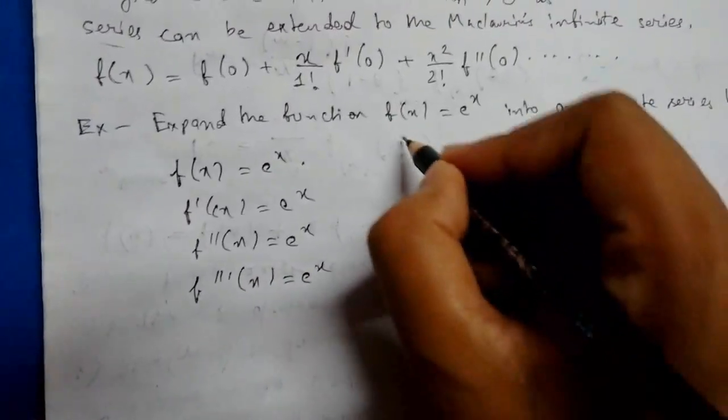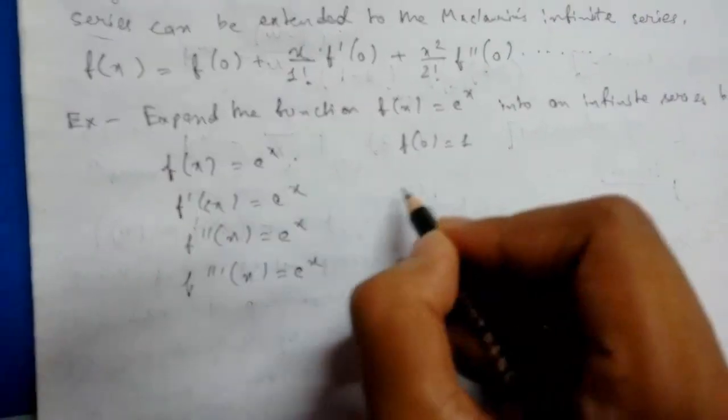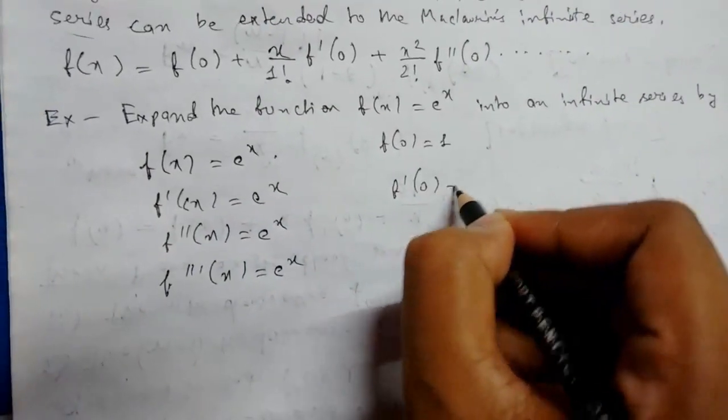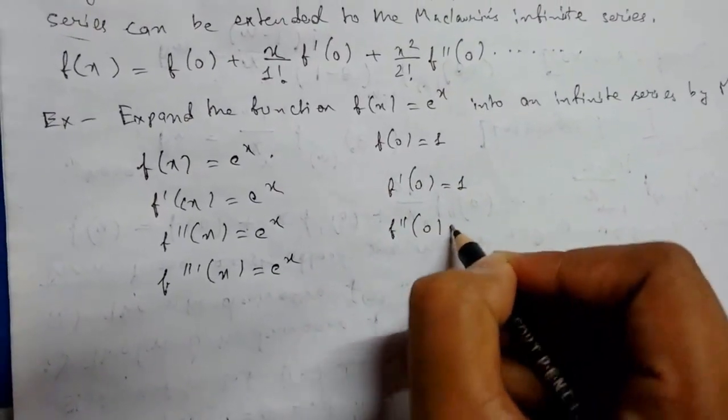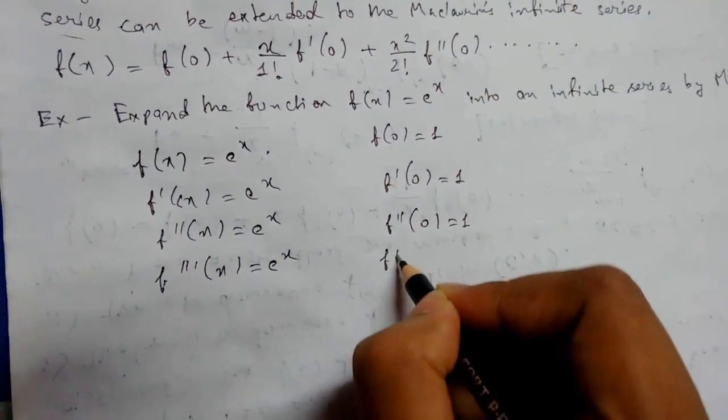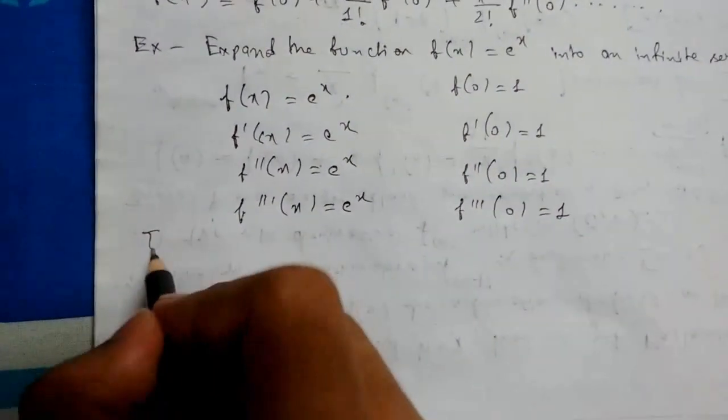Now f(0) = 1, f'(0) = 1, f''(0) = 1, f'''(0) = 1. Then by Maclaurin's theorem,